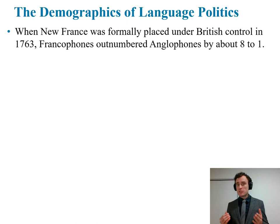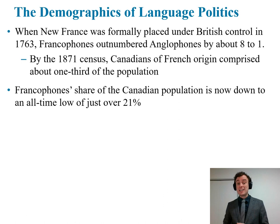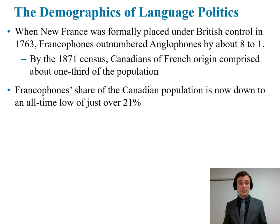To be more precise, it wasn't two centuries of domination by a minority, because by 1871 — the year of the first census in Canada — anglophones now outnumbered francophones. By 1871, Canadians of French origin comprised only about one third of the population. Fast forwarding to today, we see that francophones' share of the Canadian population is now down to an all-time low of just over 21%. What accounts for this decline? The major explanation is that immigrants overwhelmingly adopt English as their new language when they come to Canada.